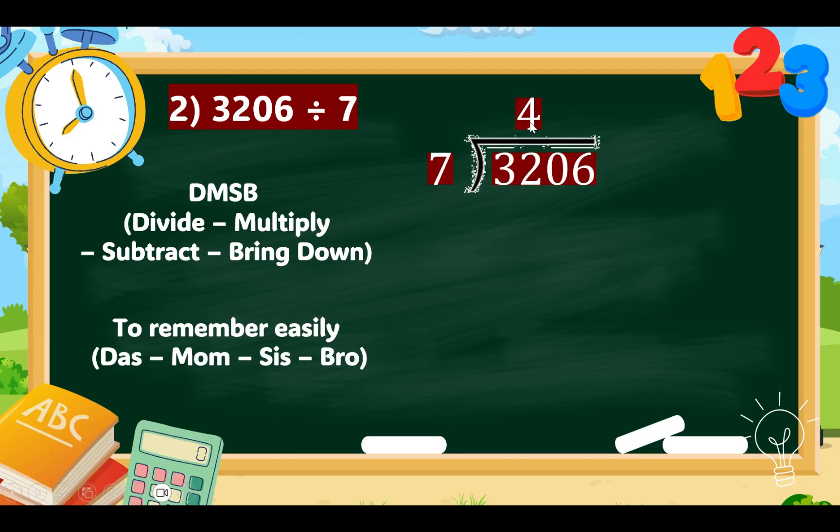Then, multiply. 4 times 7 equals 28. Subtract 32 minus 28 equals 4. Now, bring down 0. We have 40 as our new number. 40 divided by 7 equals 5. 5 times 7 equals 35. Now, subtract 40 minus 35 equals 5. Then, we still have our remaining number, 6. Bring down 6.